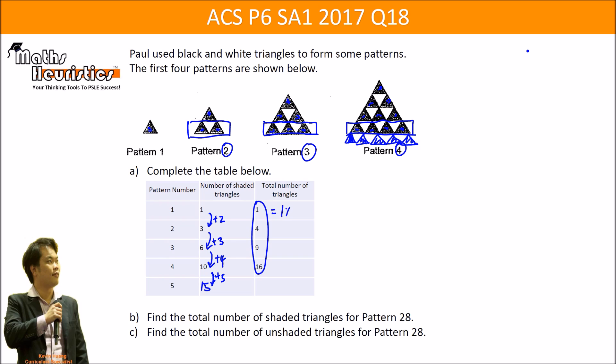So this should be equal to 1 times 1. This is equal to 2 times 2, 3 times 3, 4 times 4. So for pattern number 5, the total number of triangles should be equal to that pattern number multiplied by itself to give us 25. So this answers part A.